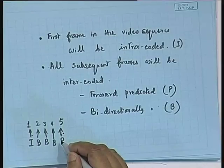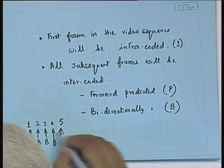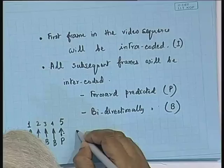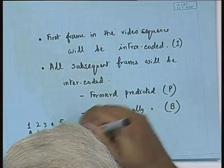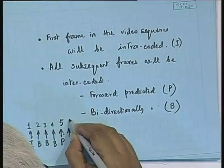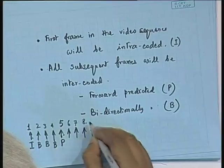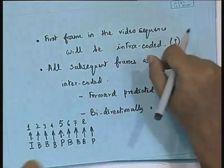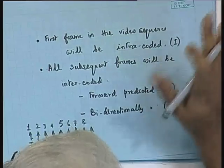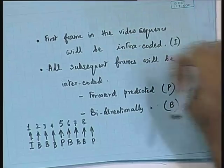Because frame 5 is now available, by a very similar mechanism we can predict frame 9 as a P frame. Because we have both frames 5 and 9, it is possible to bi-directionally predict frames 6, 7, and 8, which become B frames. The sequence in which frames are encoded follows the pattern: I, B, B, B, P, B, B, B, P, and so on. So frame 1 is I, frames 2, 3, 4 are B, frame 5 is P, frames 6 and 7 are B, continuing like that.